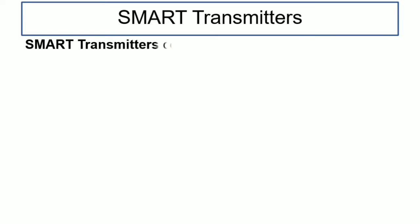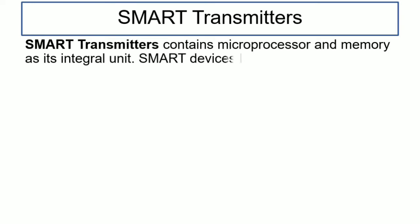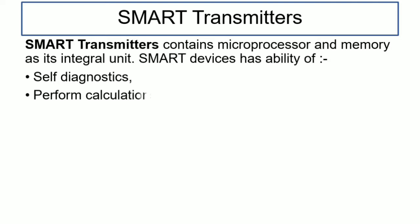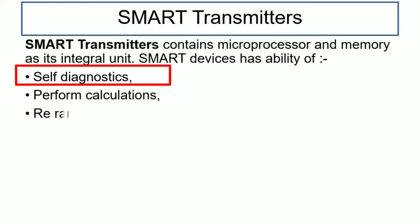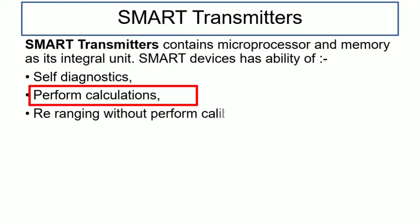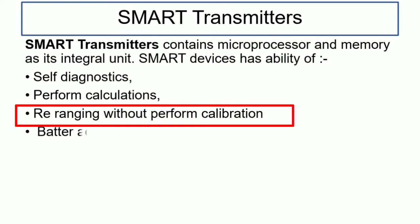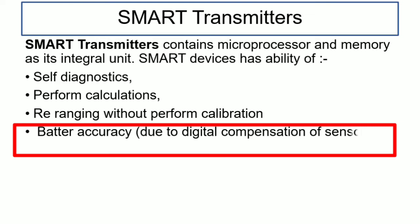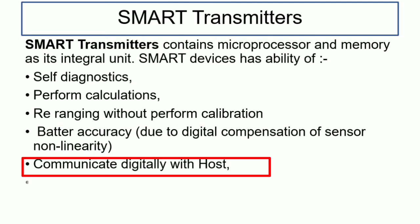Smart transmitters contain a microprocessor and memory as internal units. They have the ability of self-diagnostics, perform calculations, reconfiguration without recalibration, better accuracy due to digital compensation of sensor non-linearity, and can communicate digitally with the host.